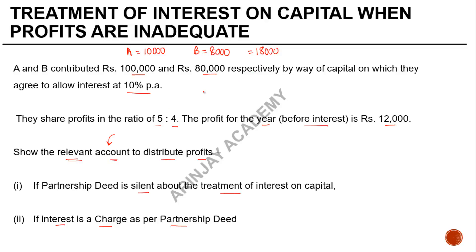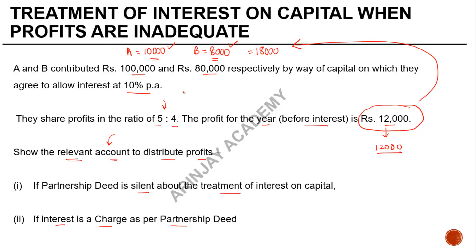For B, interest is 10% of ₹80,000, which is ₹8,000. So the total interest to be paid is ₹18,000. The profit-sharing ratio is 5:4, but the total profit available before interest is only ₹12,000, which is less than the interest to be paid. In such a case, the amount available for distribution — ₹12,000 — is distributed in the ratio of entitlement, not in the profit-sharing ratio. Incidentally, in this case both ratios are the same since 10,000:8,000 equals 5:4.